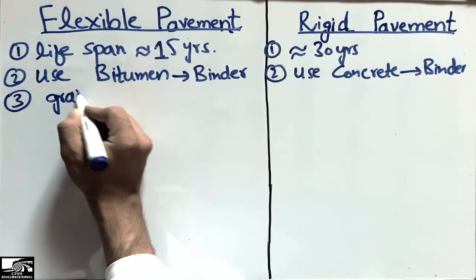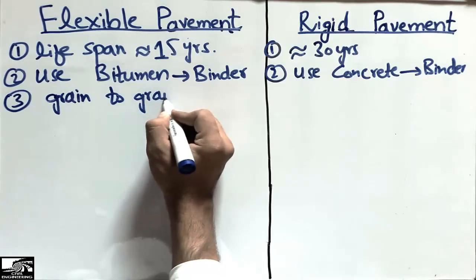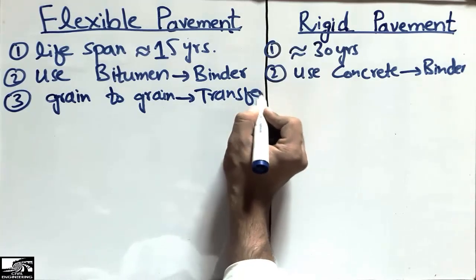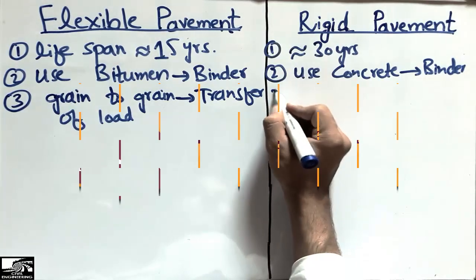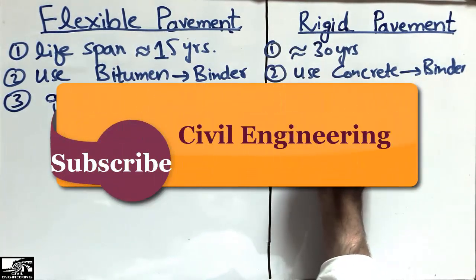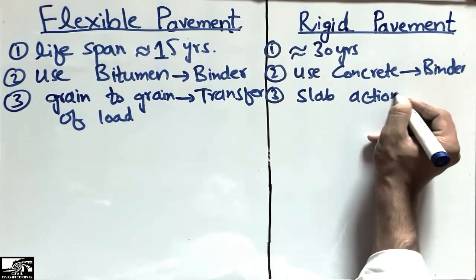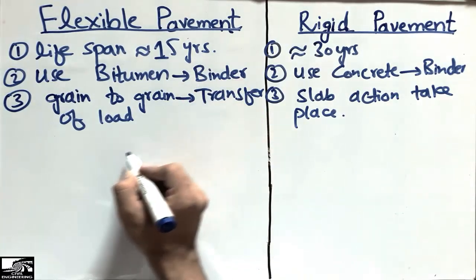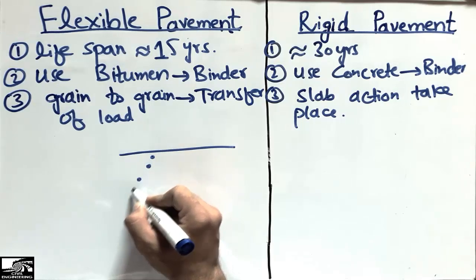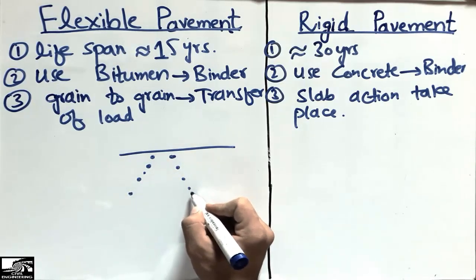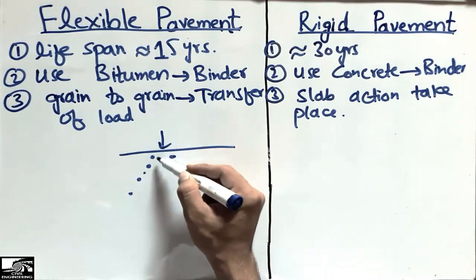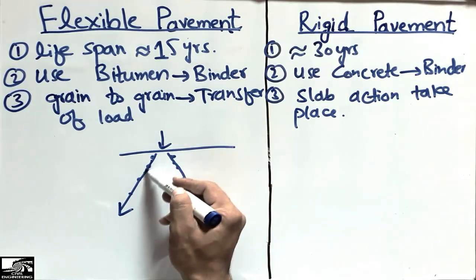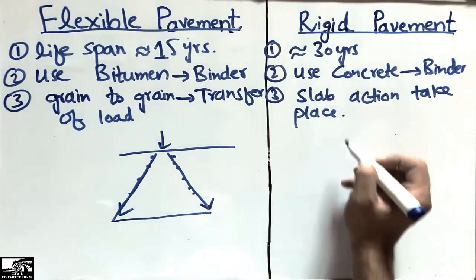Due to these materials, flexible pavements transfer the load by grain-to-grain particle transfer. Consider these are the particles of the flexible pavement — when the load comes, they transfer the load in this form, down through the particles to the ground. This is the specialty of flexible pavement.